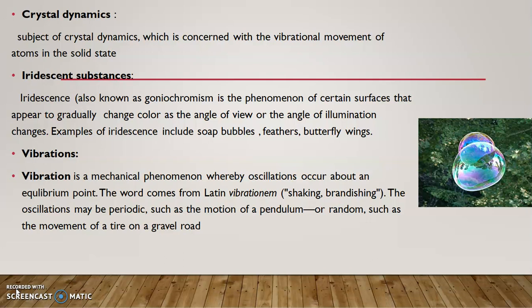And then, iridescent substance. Iridescent is also known as goniochromism. It is a phenomenon where the surfaces appear to gradually change color as the angle of view or the angle of illumination changes. For example, soap bubbles — you can see different colors. If you look at a surface from a particular angle, you can see a color change. That is an iridescent substance.